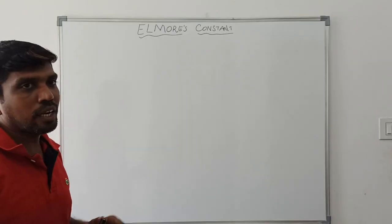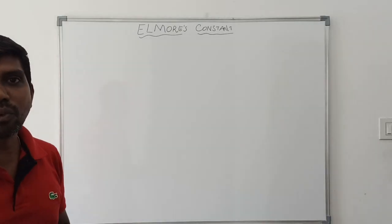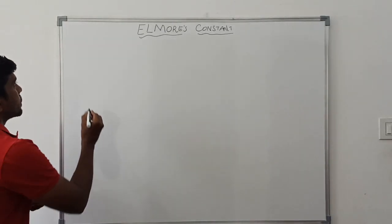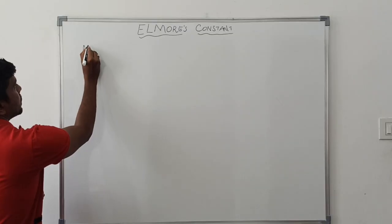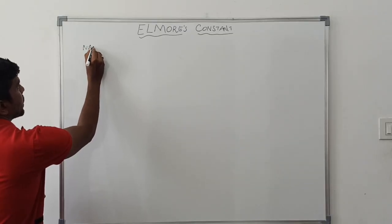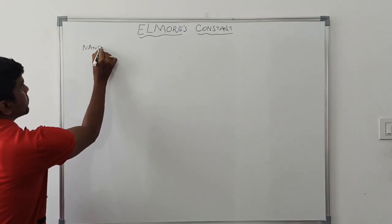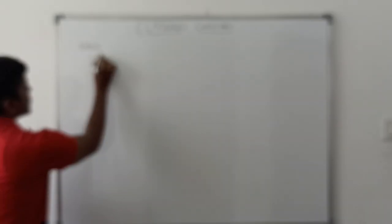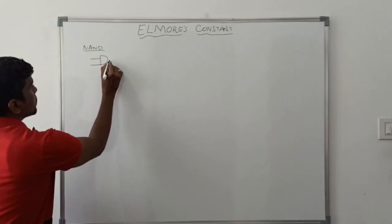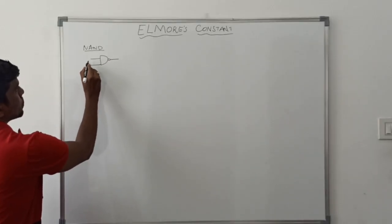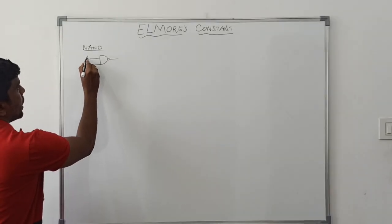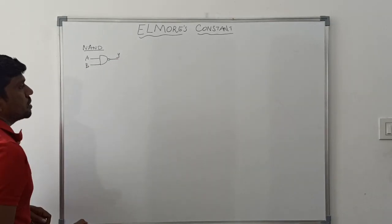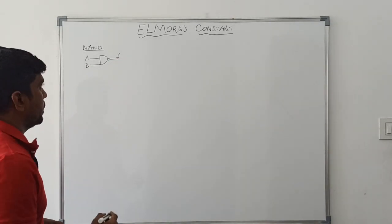This session I am going to find the switching time for NAND operation. So let me draw the symbol of NAND gate. It has two inputs A and B, and output is Y.